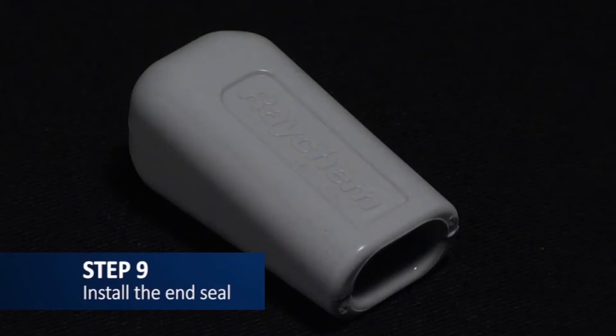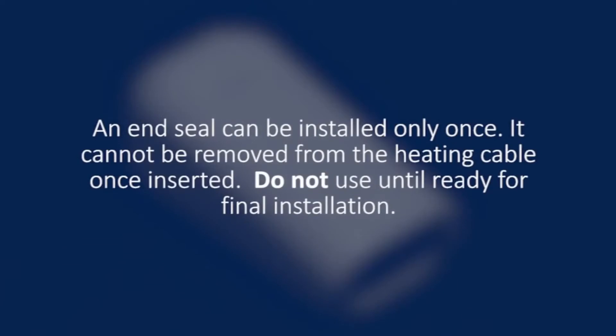Now, let's proceed to the installation of the end seal. Note that an end seal can be installed only once, and it cannot be removed from the heating cable once inserted, so do not use it until ready for final installation.